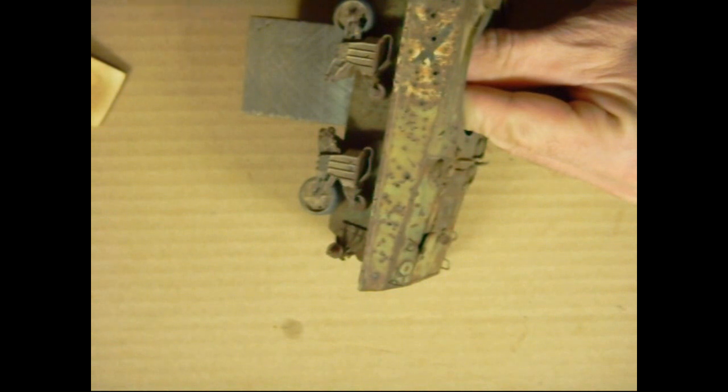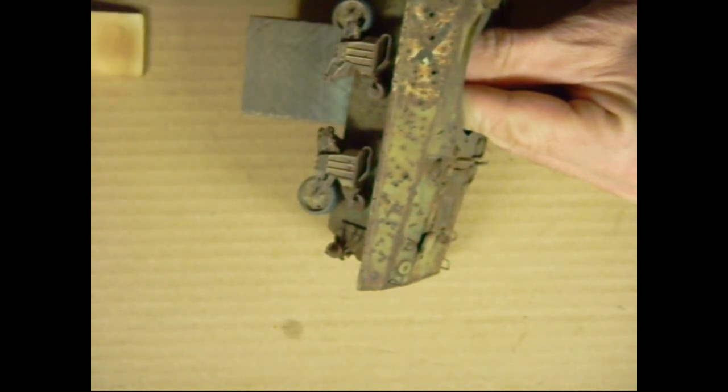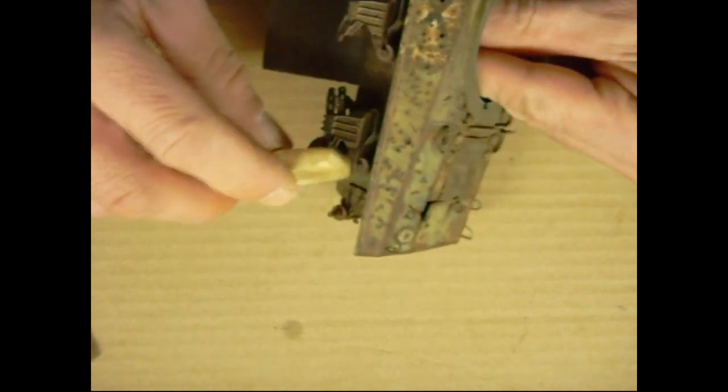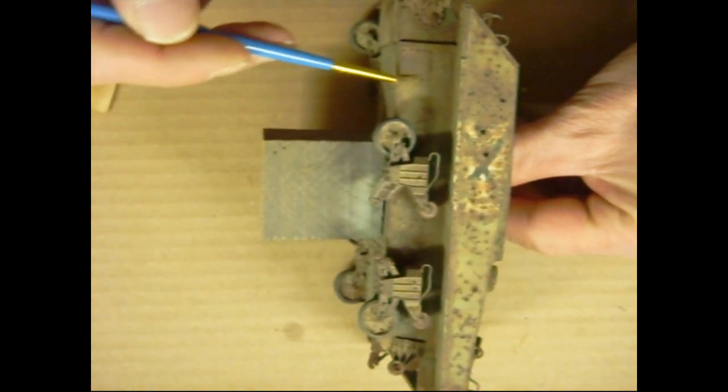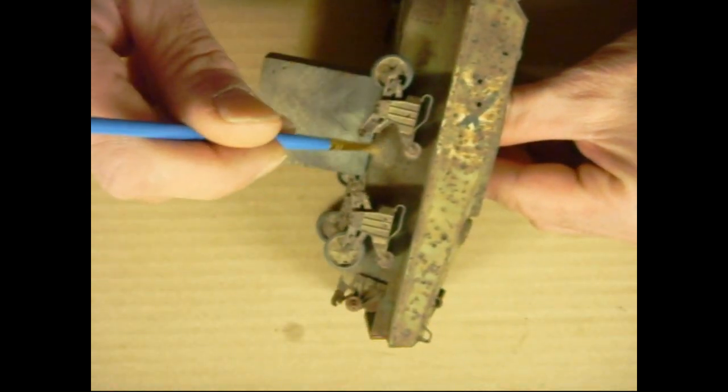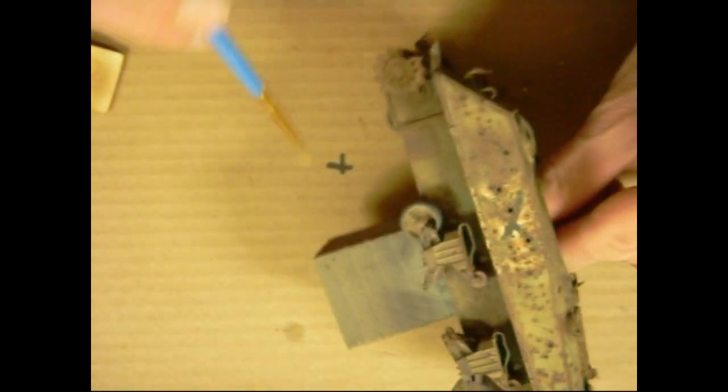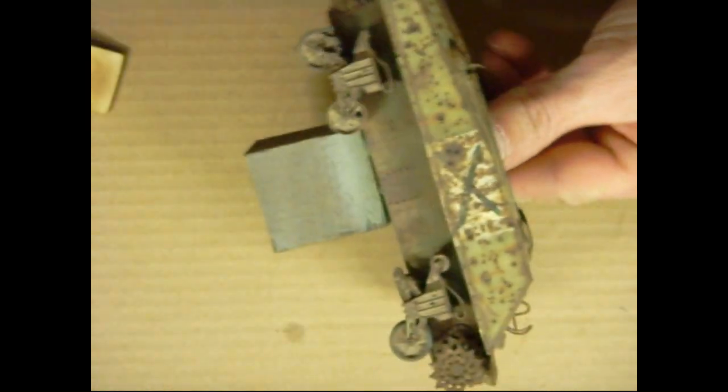I normally leave pigments off until the very end, when I know I'm not going to handle the model anymore. That way I avoid accidentally removing any of the pigments with my hands, my fingers. I'll just drop some right in there. I'll add some to the lower section, the hull. Right in that area there. You would have had a lot of accumulated dirt in that area, so we'll add some there.